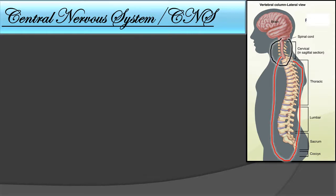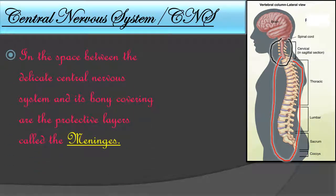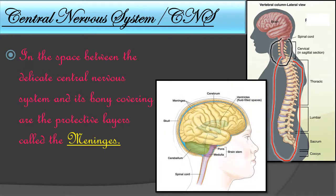The spinal cord is divided into different regions: the cervical region, thoracic, lumbar, sacrum, and coccyx. These are the different divisions of the spinal cord or vertebral column. In the space between the delicate central nervous system and its bony covering are protective layers called the meninges.